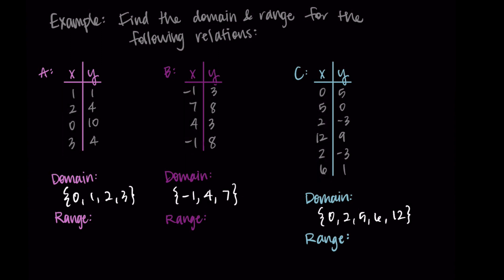All right. So now we just repeat this process for the range, this time looking at the Y column, because those are the outputs that go with the inputs. So for relation A, I have {1, 4, 10}. Those are my possible outputs. Again, not writing the repeated value and putting them in order from least to greatest. Then in relation B, I have {3, 8}, ignoring the repeated items. And in relation C, I have {-3, 0, 1, 5, 9}. And there we go.